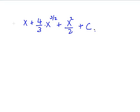So, the answer can be written as, the full thing now, including that last part, is x plus 4/3 times x to the power of 3/2 plus x² over 2 plus c. So, that's the answer to the third one. Let's do another one.